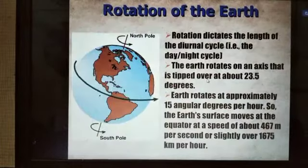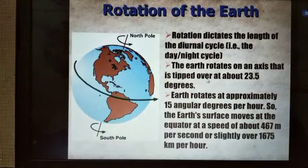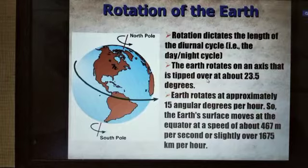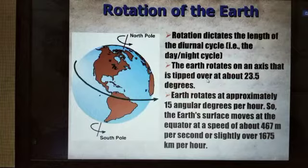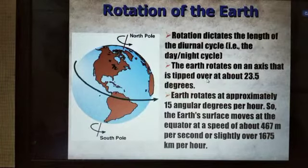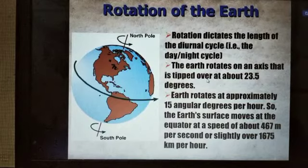Rotation dictates the length of the diurnal cycle—that is, the day and night cycle. The Earth rotates on an axis that is tipped over at about 23.5 degrees. Earth rotates at approximately 15 angular degrees per hour. The Earth's surface moves at the equator at a speed of about 467 meters per second, or slightly over 1675 kilometers per hour.